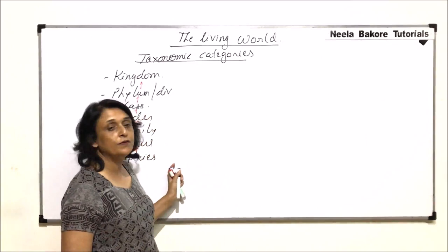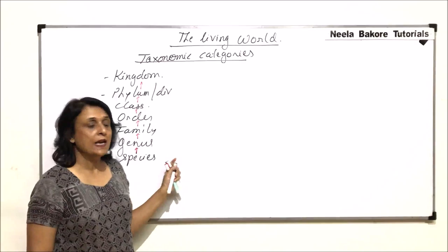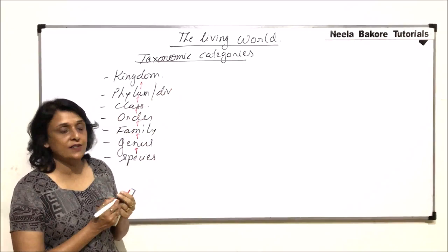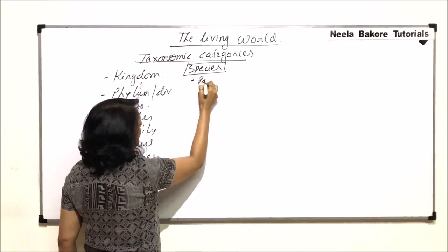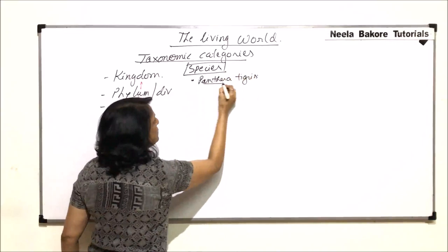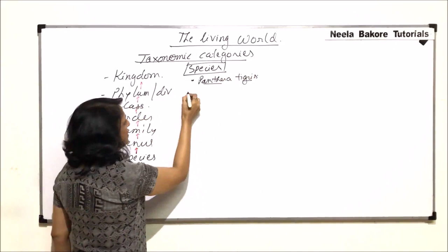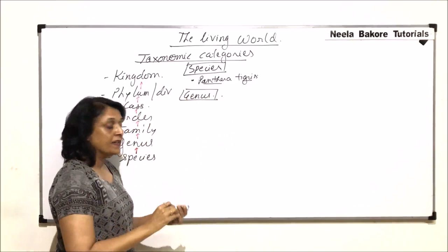In the previous part, we understood the definition of species, the lowest category which has closely related organisms. Now we will go up the hierarchy. We will talk about the genus. I am going to write a couple of species again here so that we are able to relate to this. Suppose, Panthera tigris. This is one species — tigris — and Panthera is the name of the genus. Now let us come to the next category: Genus.